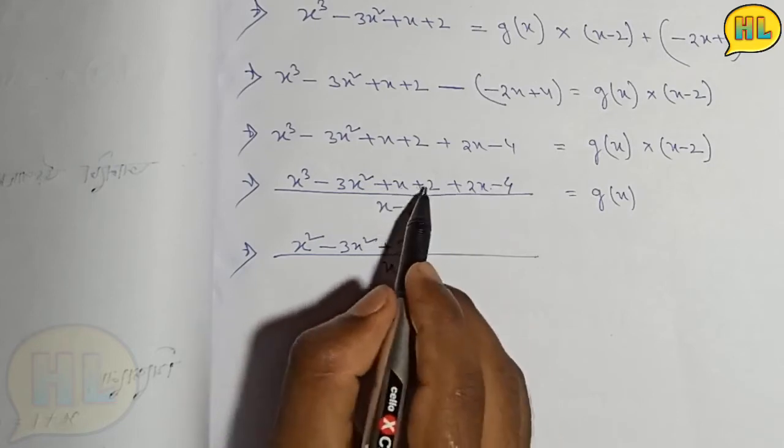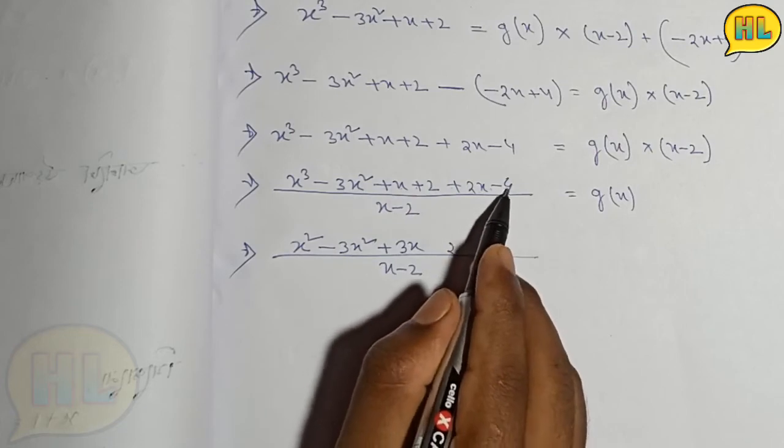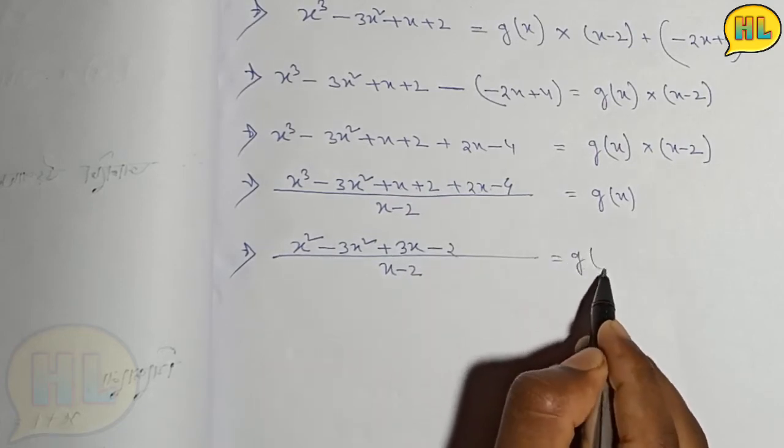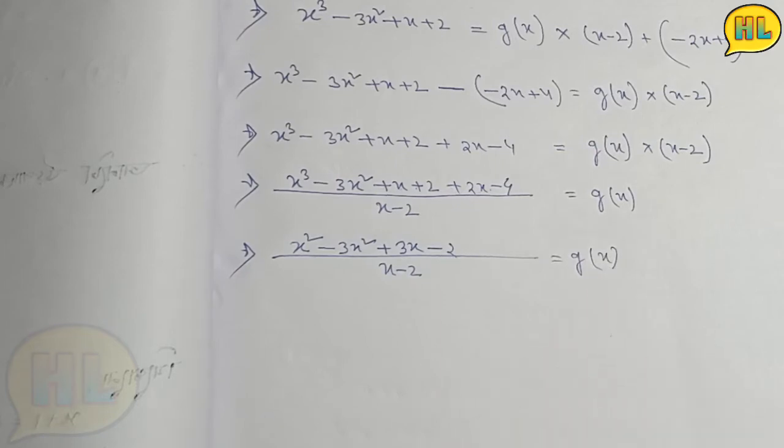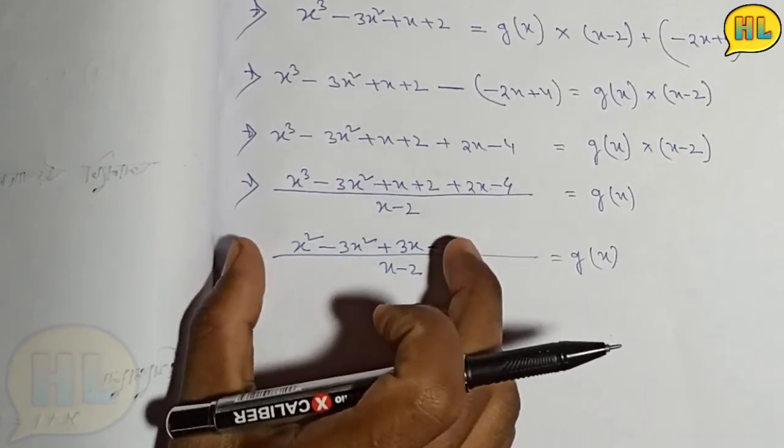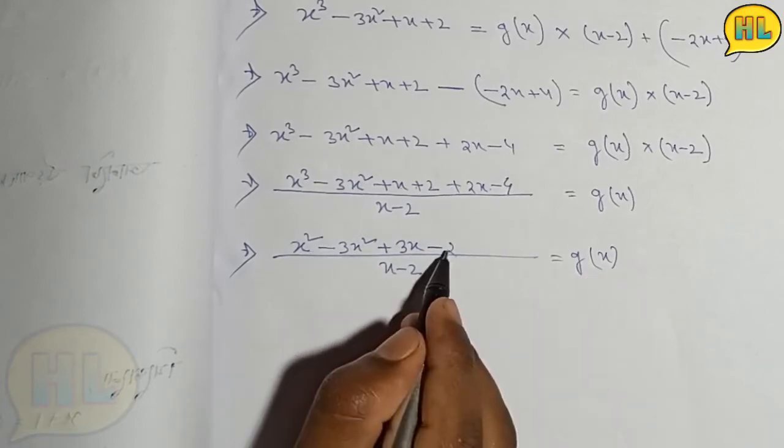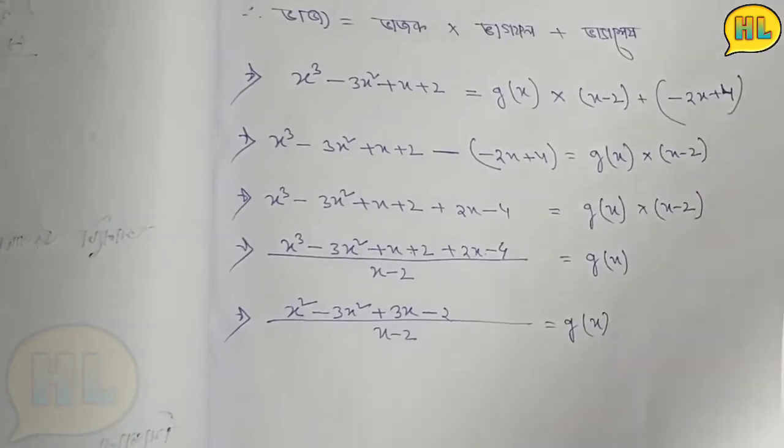So x minus 2 times the product that we get when we factor this out from the polynomial.